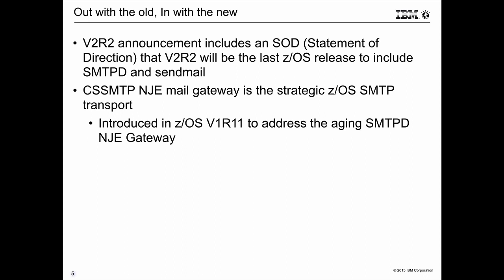Our strategic direction for mail is through the CSS SMTP mail gateway. We introduced CSS SMTP in z/OS v1r11, about half a dozen years ago. It has been around quite a while and the whole idea was to do a ground-up replacement — a new, more modern program than the SMTP daemon we had.